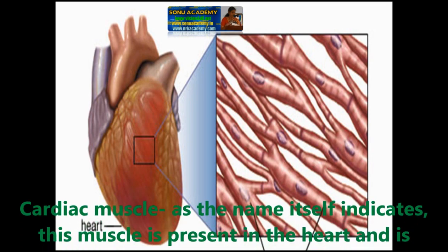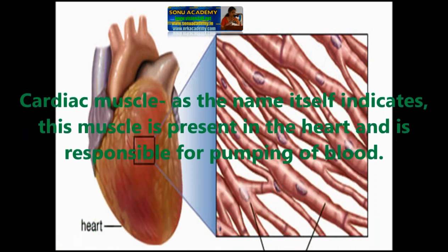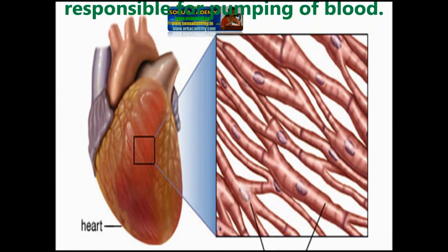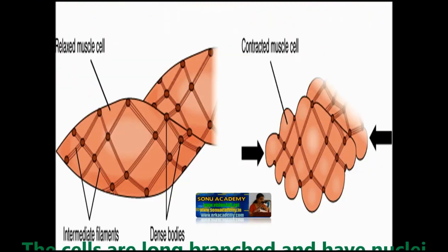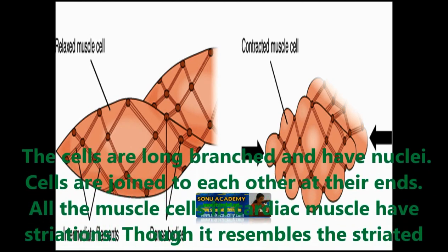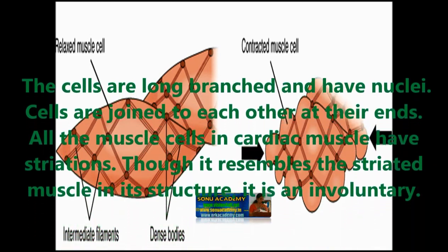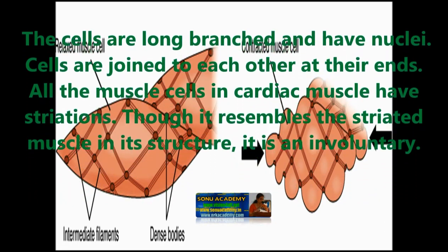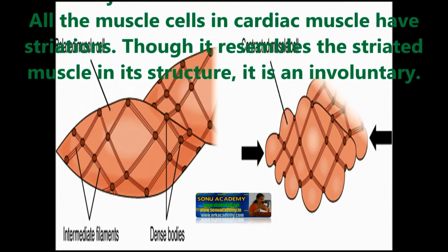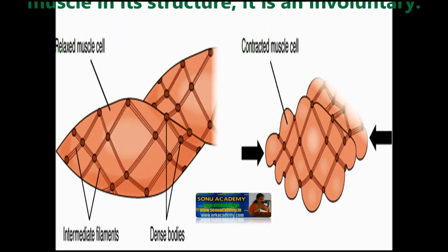Cardiac muscle, as the name itself indicates, is present in the heart and is responsible for pumping of blood. The cells are long, branched and have nuclei. Cells are joined to each other at the ends. All the muscles in cardiac tissue have striations, though it resembles striated muscle in structure, it is an involuntary muscle.